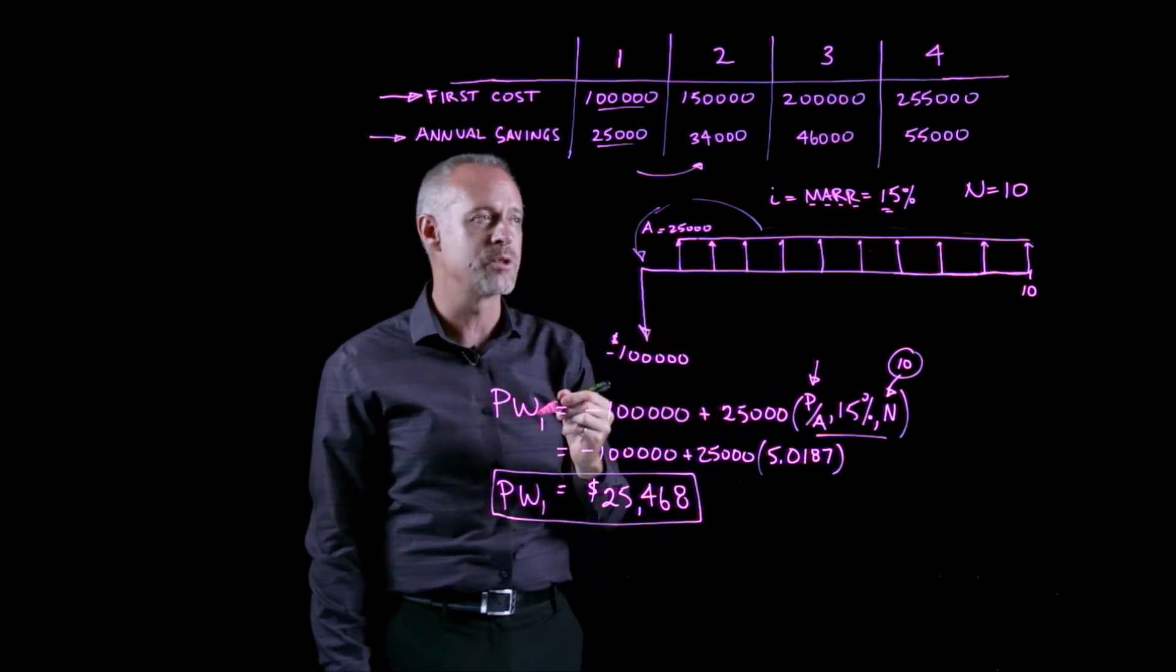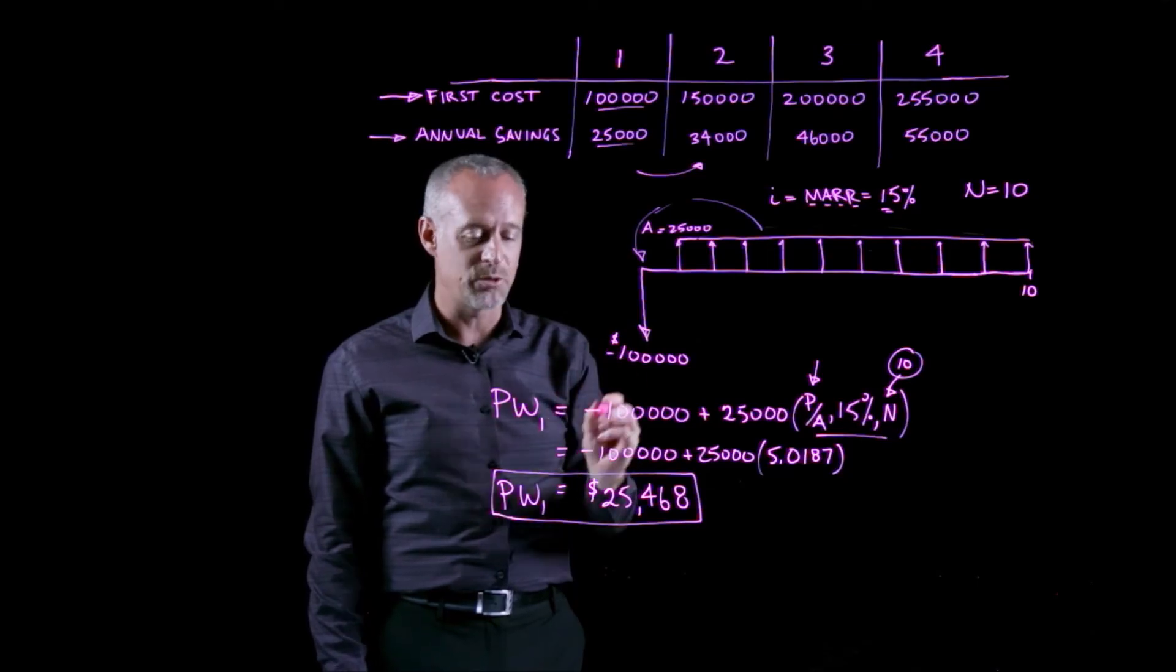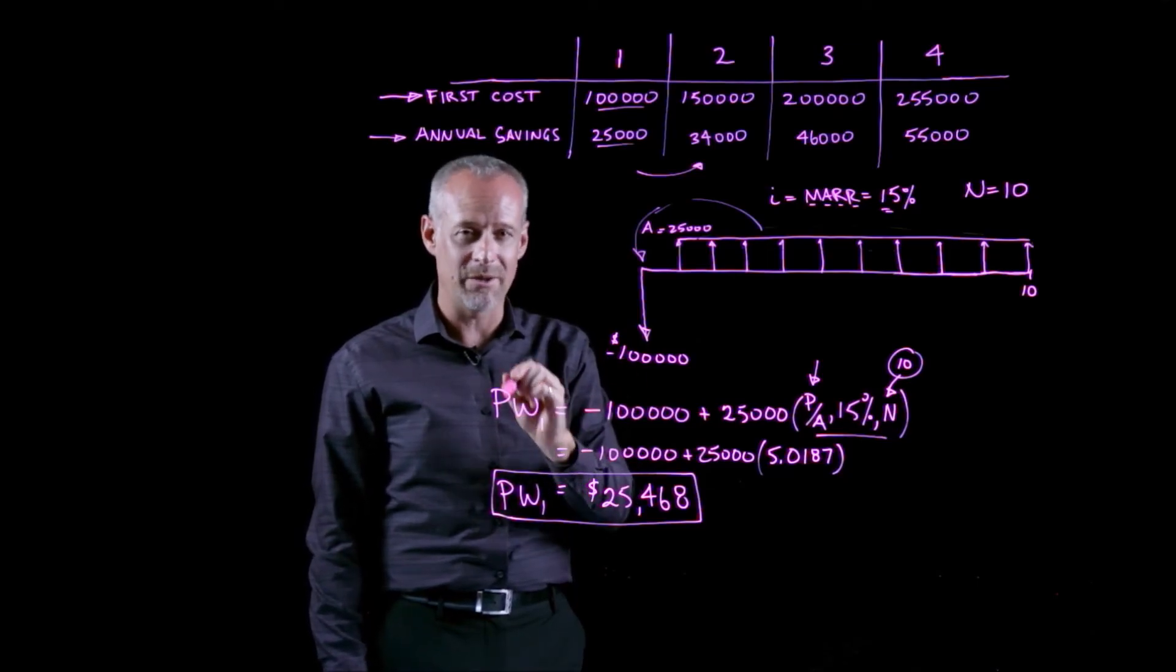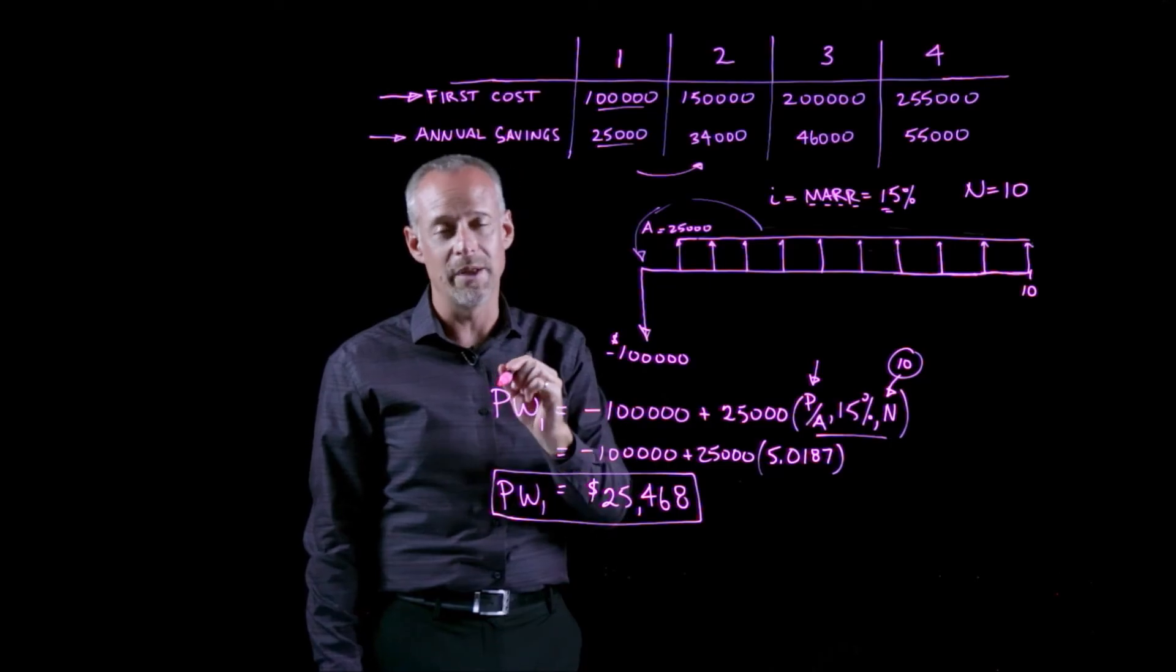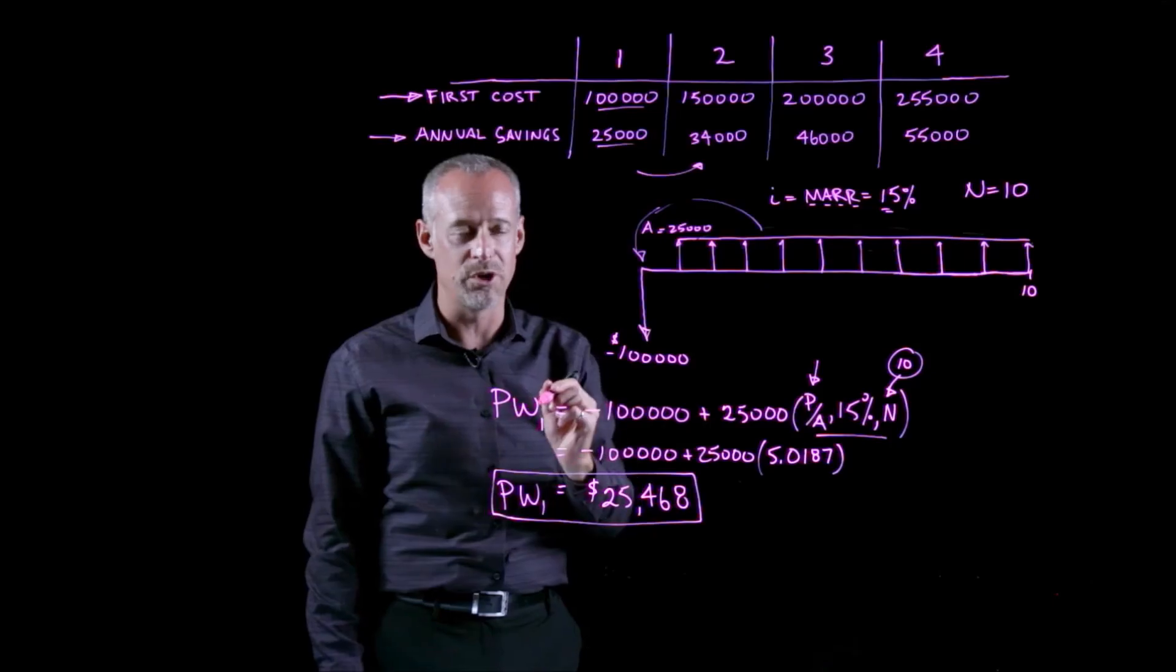Later on in the course, we'll learn the value of the interest rate that actually makes the present worth exactly equal to zero, and we'll call that something else called the IRR, or the internal rate of return for the project.